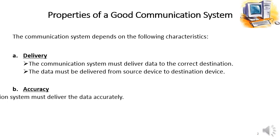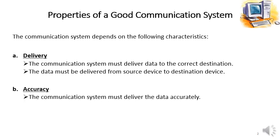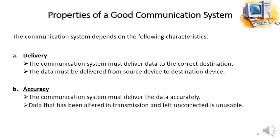The second property is accuracy. The communication system must deliver data accurately. Accuracy means there must not be any loss of data, or loss of some part of the data, and the data must arrive in its proper sequence. Data that has been altered in transmission and left uncorrected is unusable. The data must be in its genuine or accurate form when it arrives at the destination.